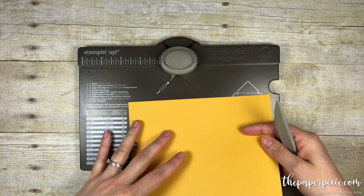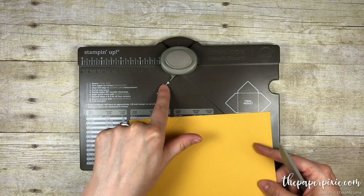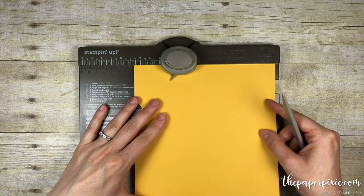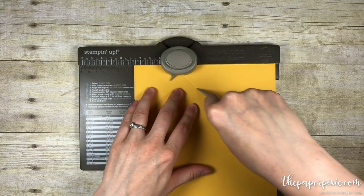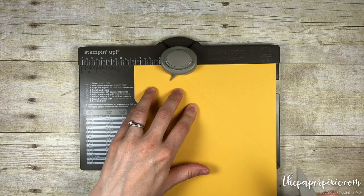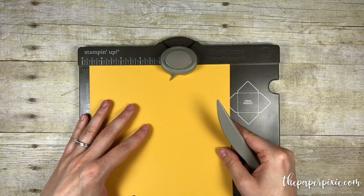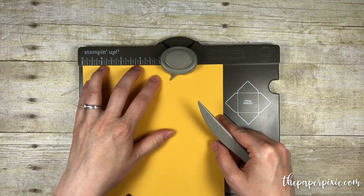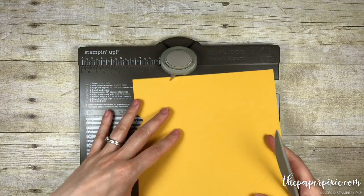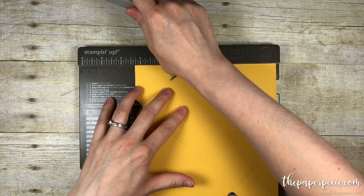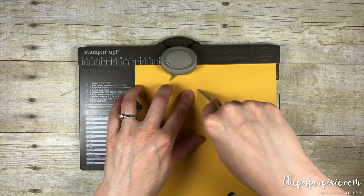Then I am going to rotate counter clockwise and using this score guide, I am going to line that up with the score line we just made. Punch and score. We don't need to remember any other measurements, we just rotate, line up the score guide with that last score line we made, punch and score, and then the final side, punch and score.